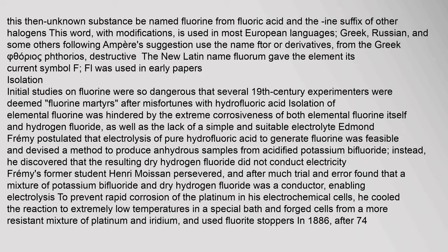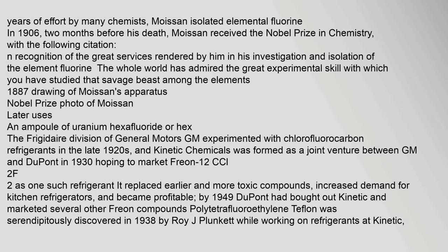In 1886, after 74 years of effort by many chemists, Moissan isolated elemental fluorine. In 1906, two months before his death, Moissan received the Nobel Prize in Chemistry with the citation recognizing 'the great services rendered by him in his investigation and isolation of the element fluorine.'